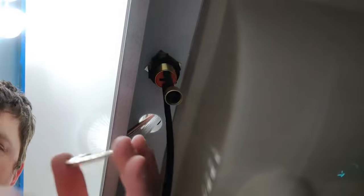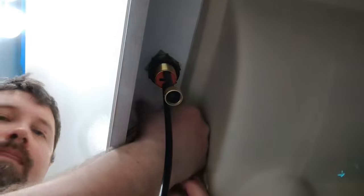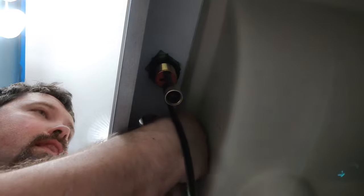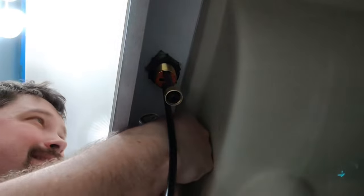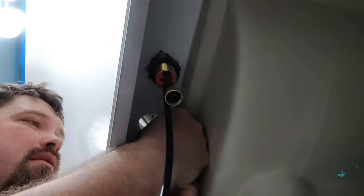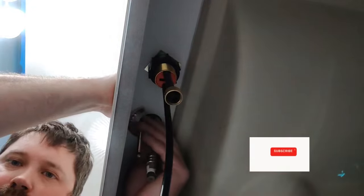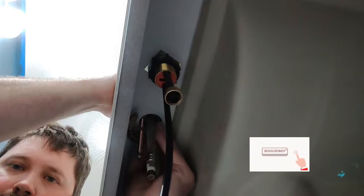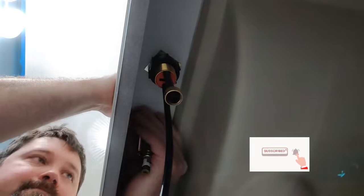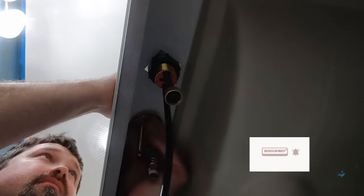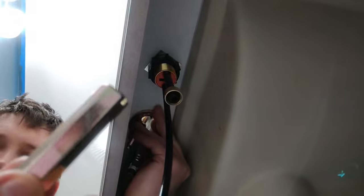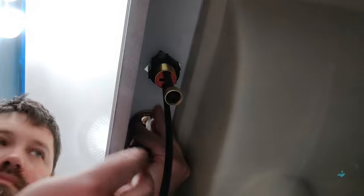Next we're going to take our horseshoe bracket and slide it onto the stud post on the underside of the faucet spout. Then we're going to take our long mounting nut and screw it onto the stud post.